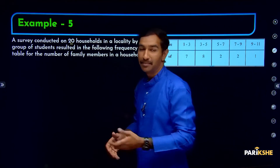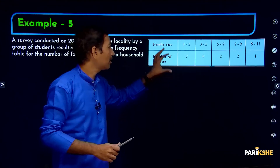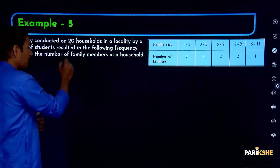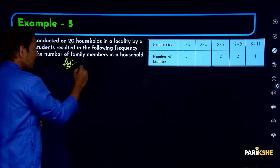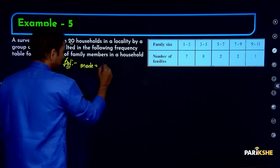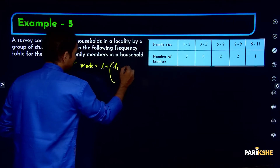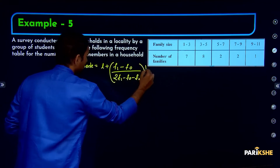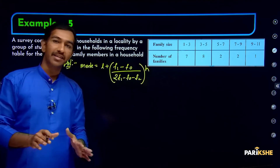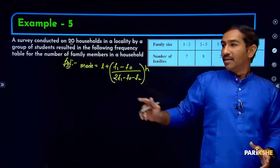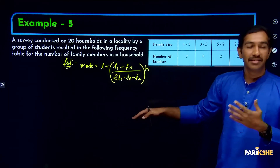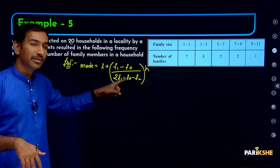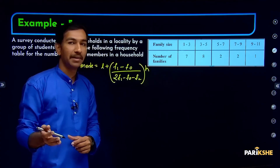To find the mode, first remember the concept of mode, then write the formula. Solution: mode is equal to L plus (F1 minus F0) divided by (2F1 minus F0 minus F2) into H. Write the formula first. Next, we substitute the values from the table into the formula and simplify to get the answer.